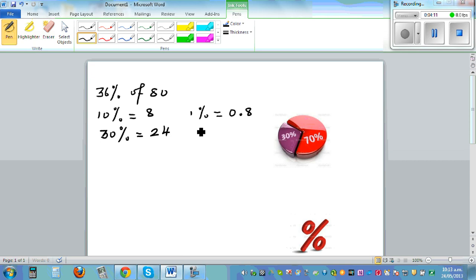From 1% you can find 6%. If 1% is 0.8, then 6% is 0.8 times 6, which is 4.8 with one decimal place. So we can say 36% is 28.8.